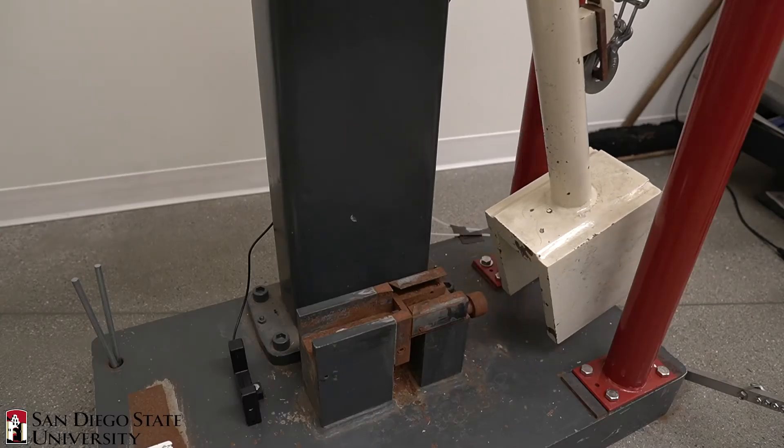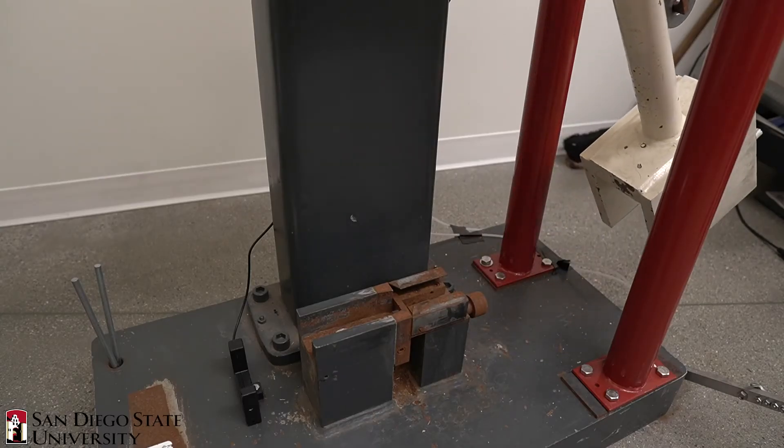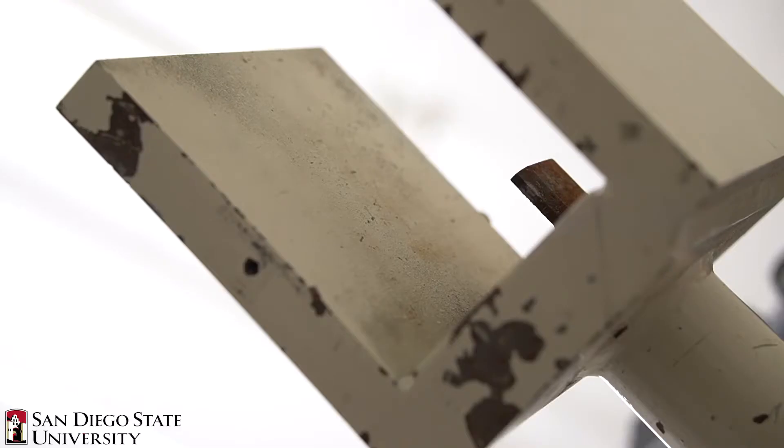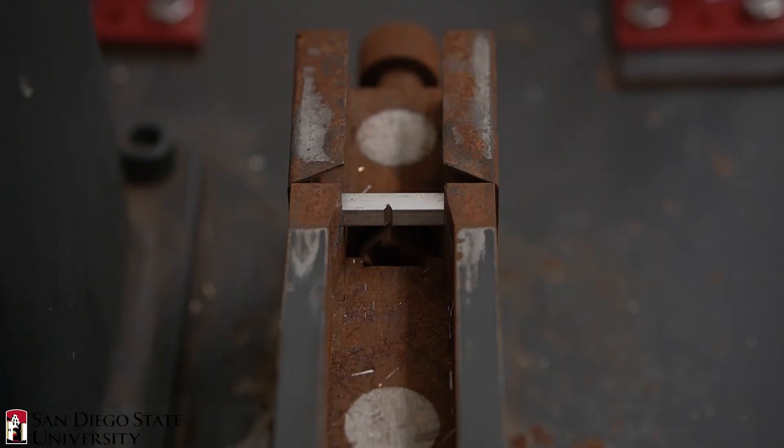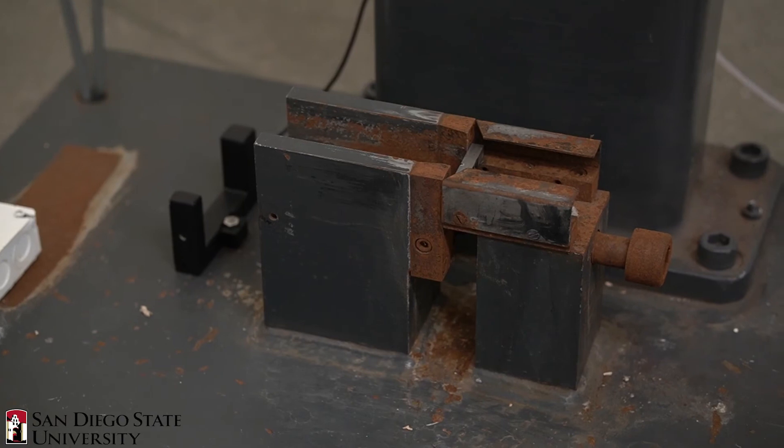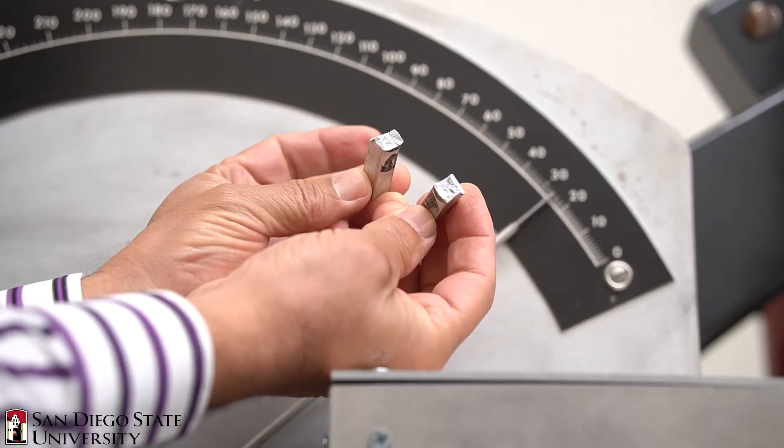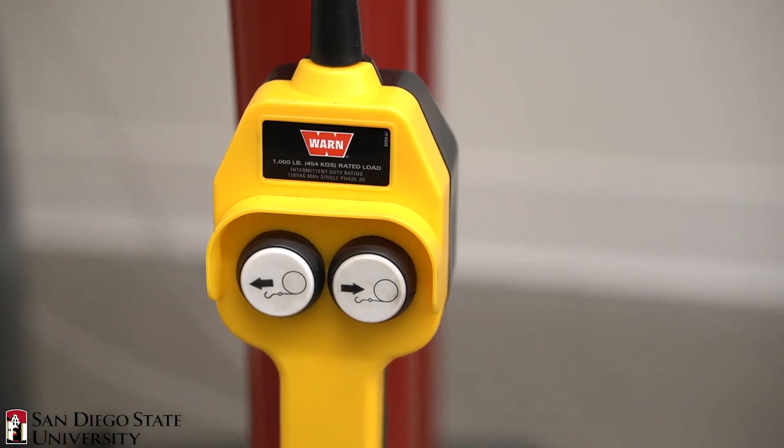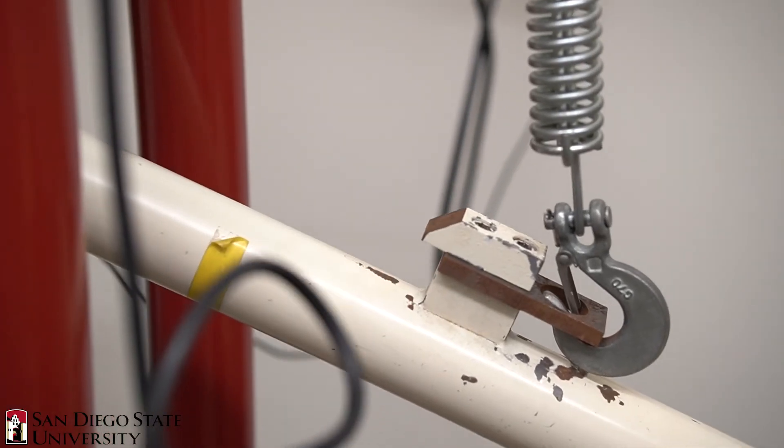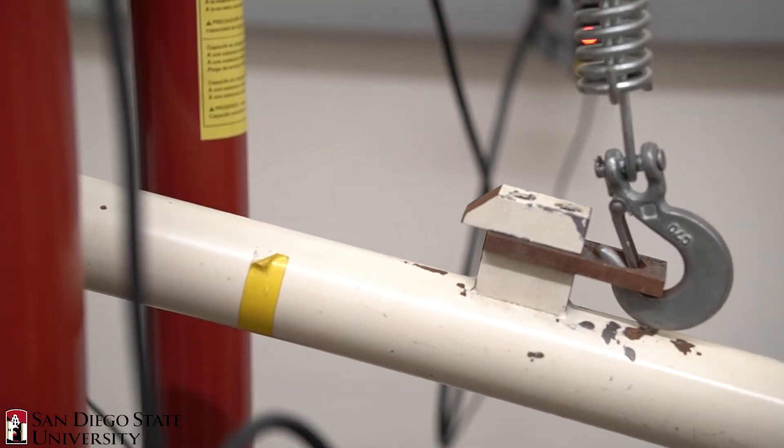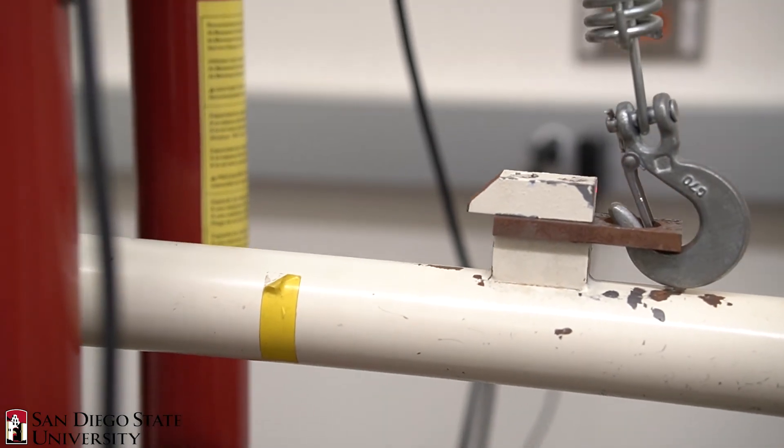The hammer is lifted to a specified height, locked into place, and further secured with a safety latch. Once the latch is released, the hammer swings into the specimen and fractures it. Safety is continuously emphasized during this lab. All participants and observers are required to wear safety glasses. One person is designated to ensure the safety latch is securely applied.